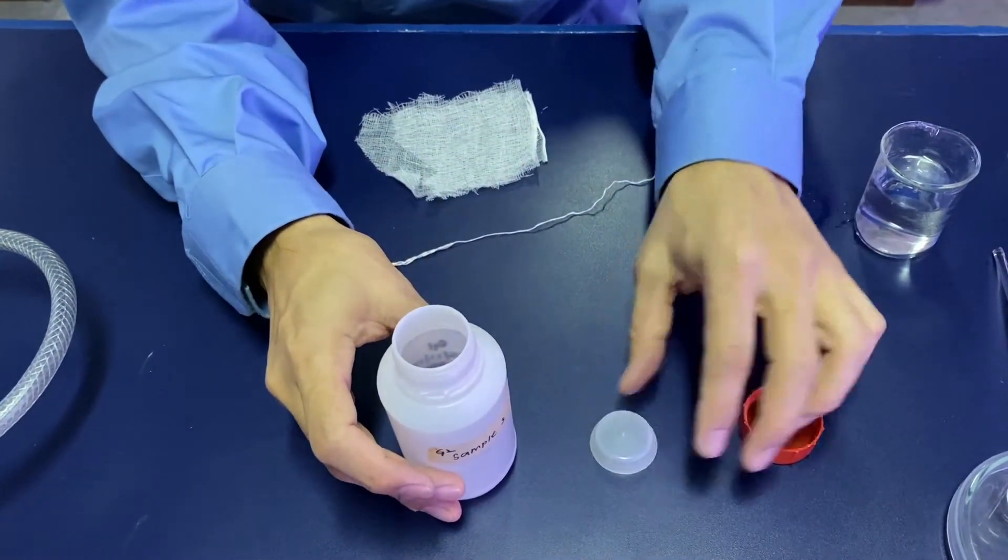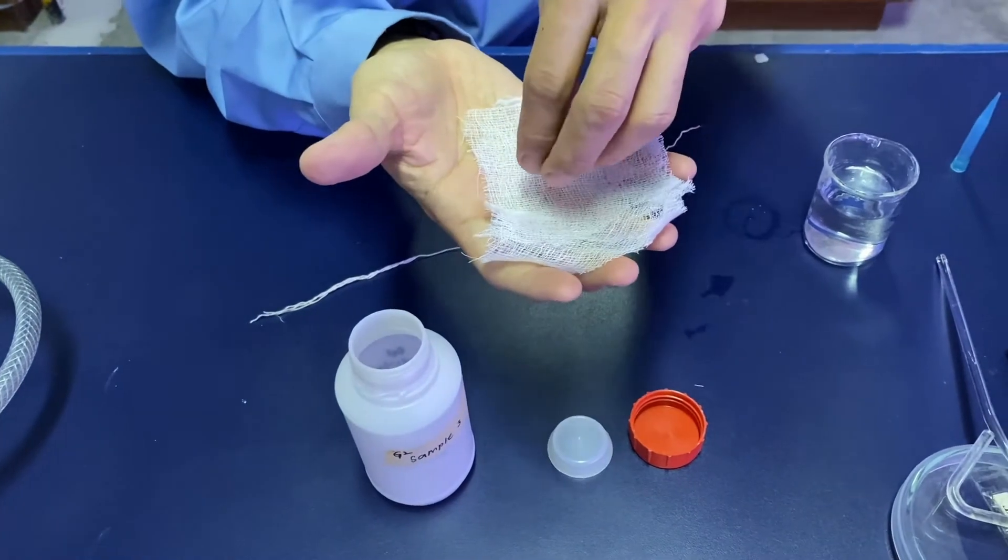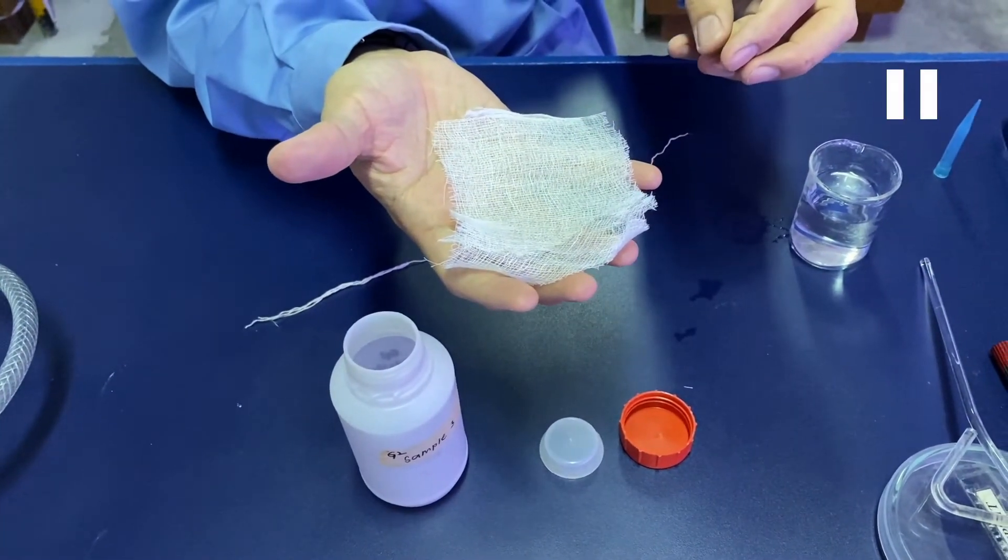The bottle has a cap and a screw cap. This is the gauze where you place the soil on top.